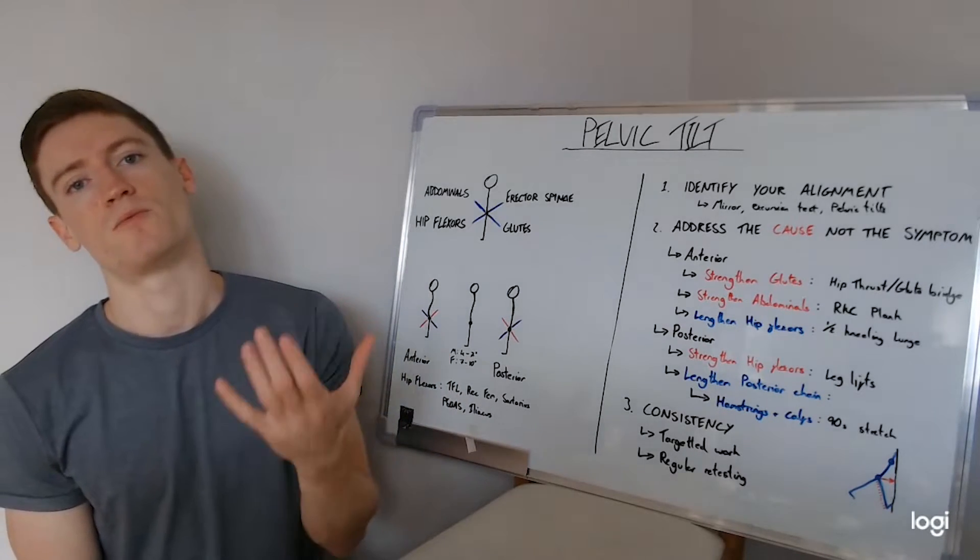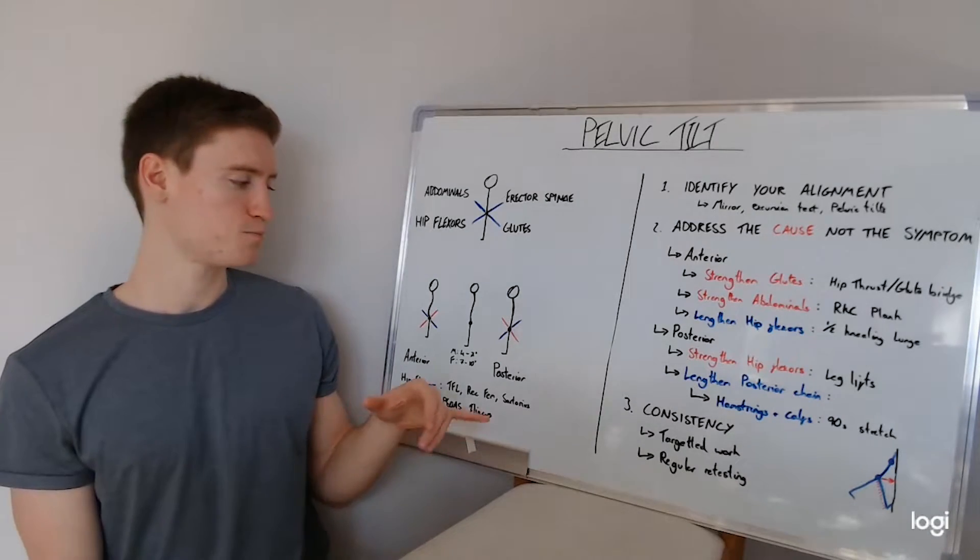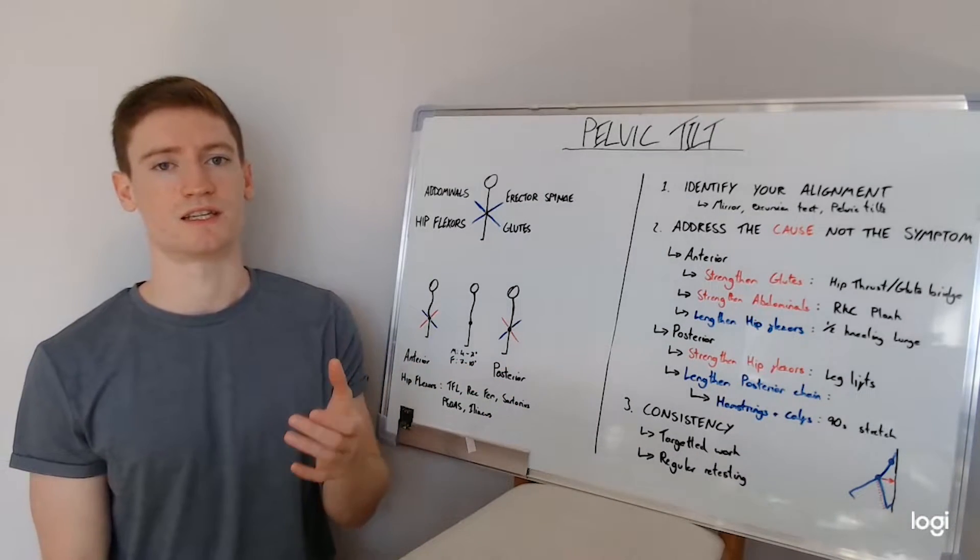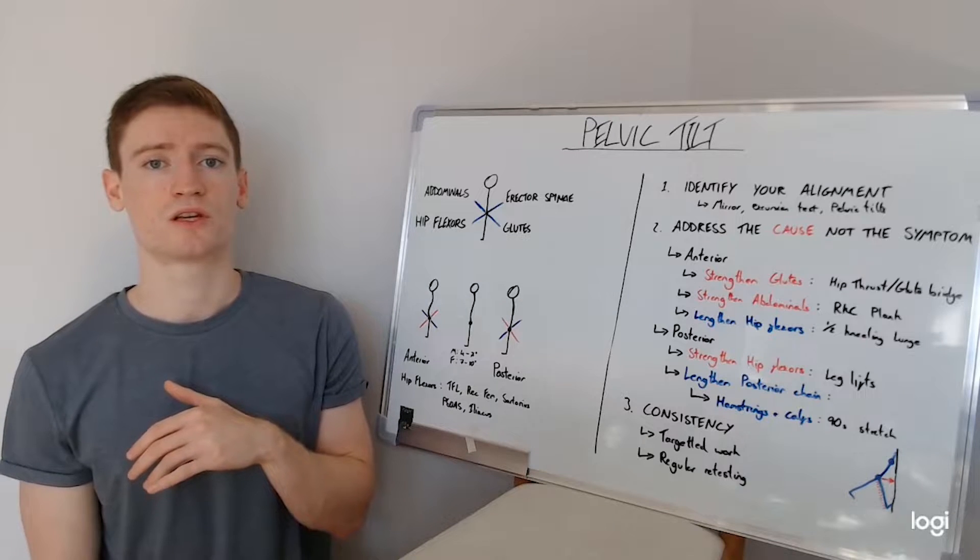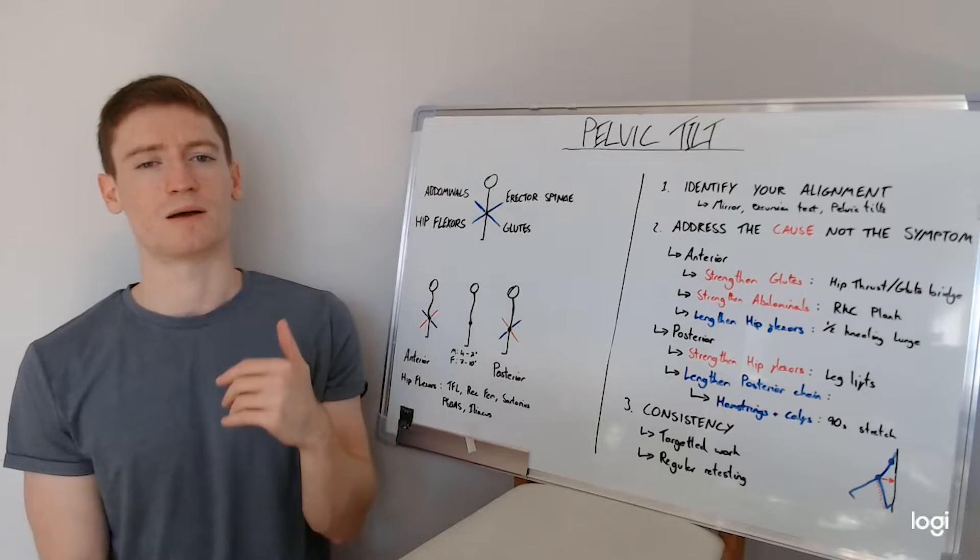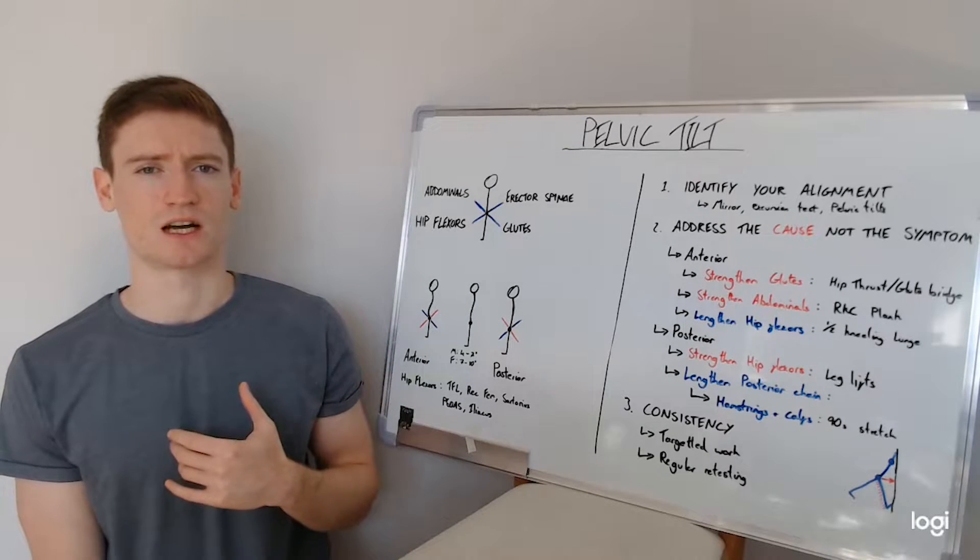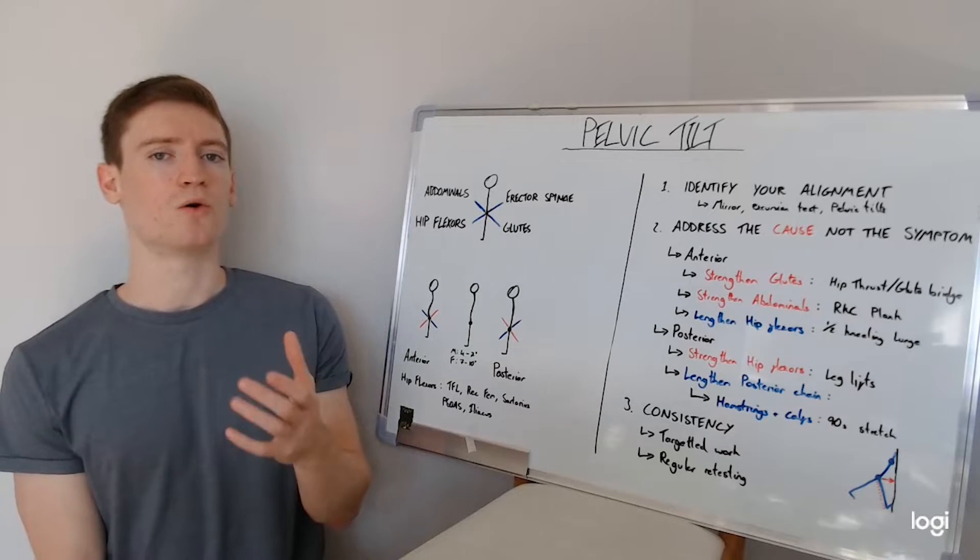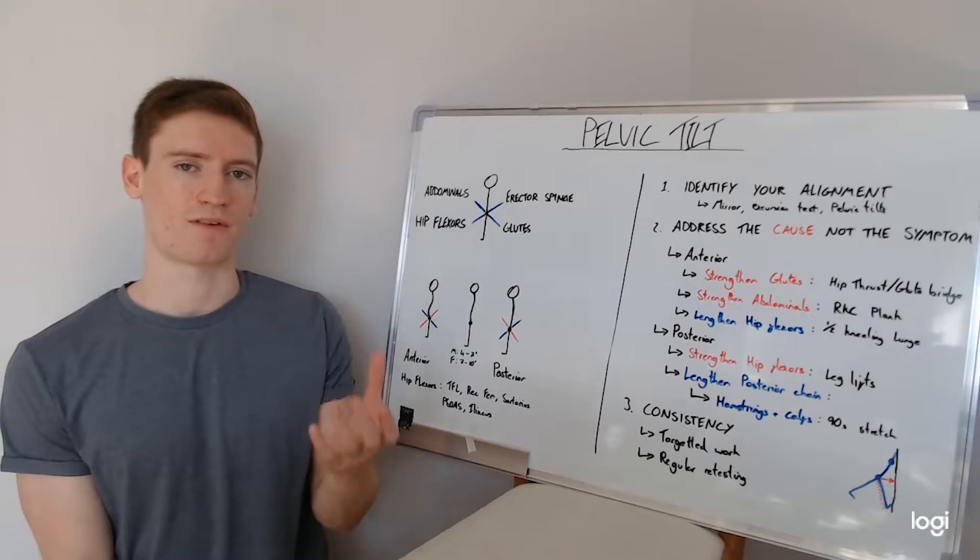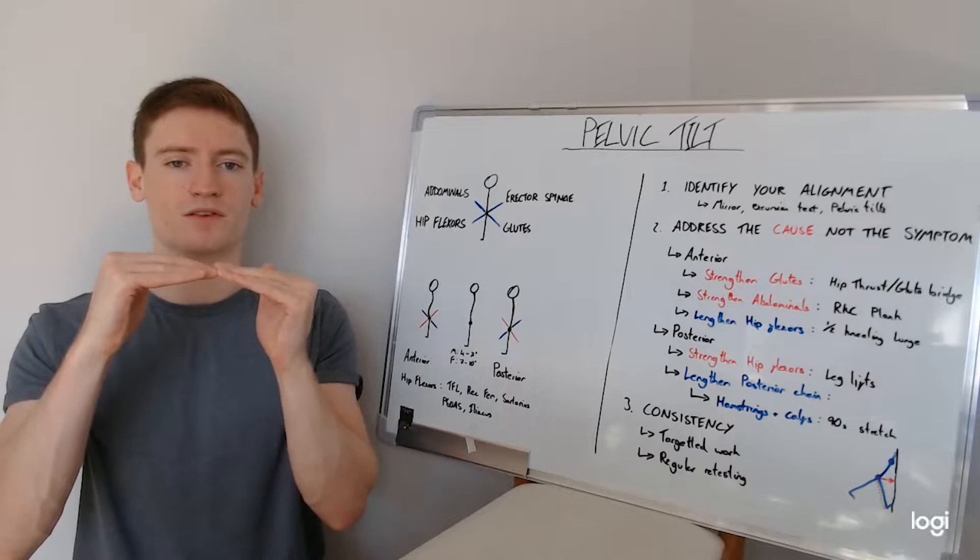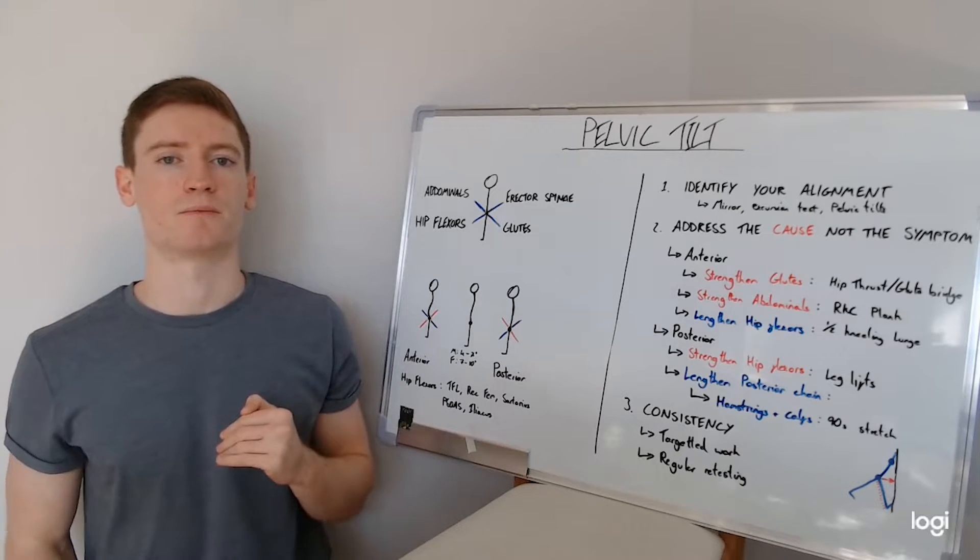It's the opposite, then with the posterior pelvic tilt, where you've got tightness instead from the abdominals and glutes, also possibly down into more into that posterior chain, which is the hamstrings and calves as well, which we will get into. But also it is a weakness of the hip flexors that aren't pulling the pelvis down. Instead, it's getting tilted up.